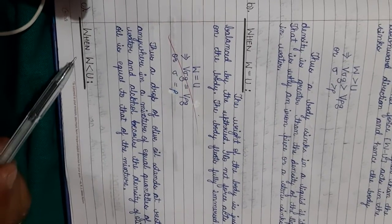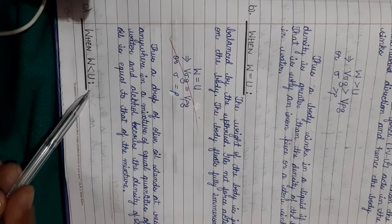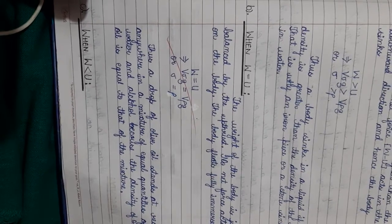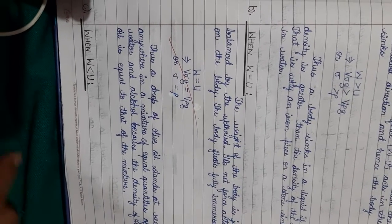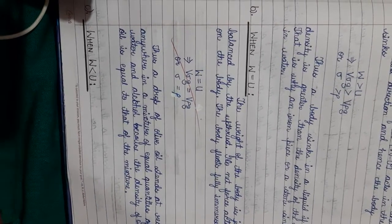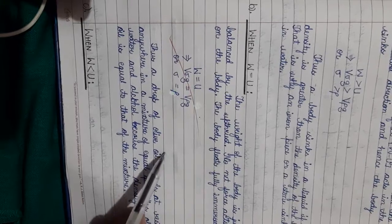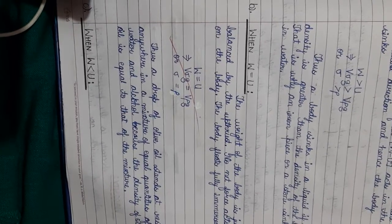Third condition I told you is W is less than U. In this case what is happening? The body will float by partially submerging. So all these conditions are shown to you here. So how does it happen? Thank you. Have a great day.